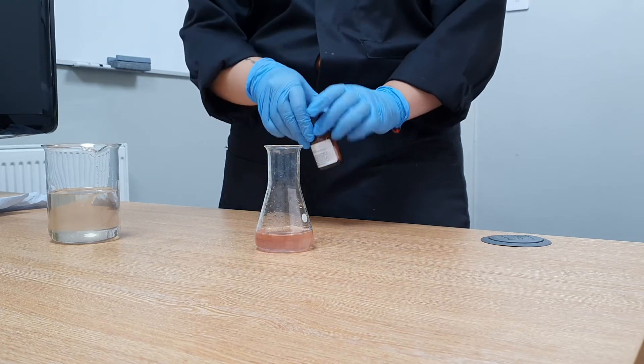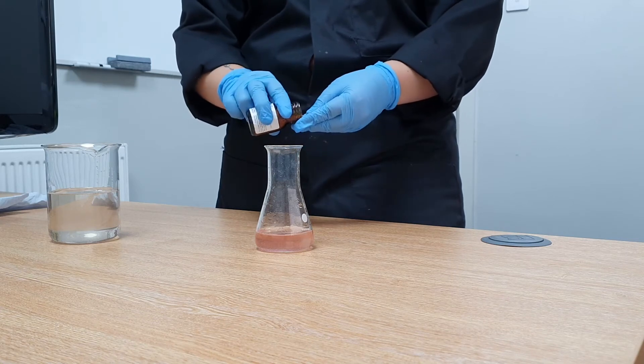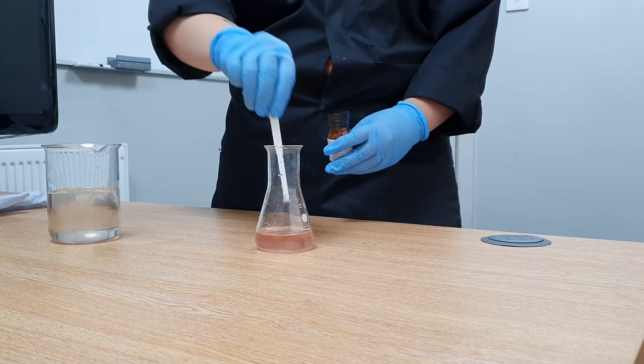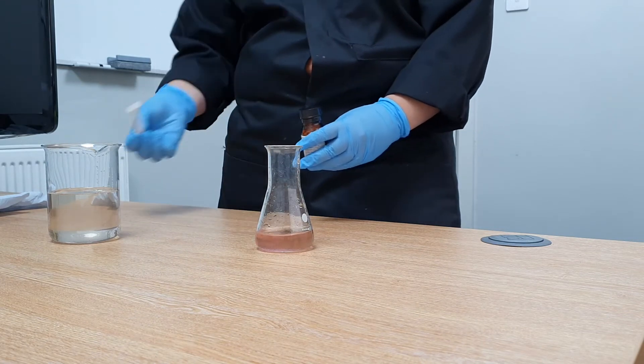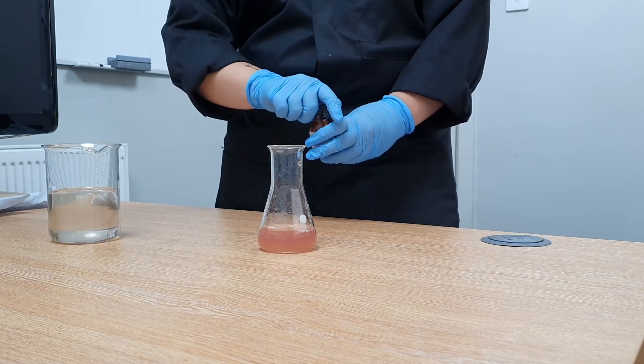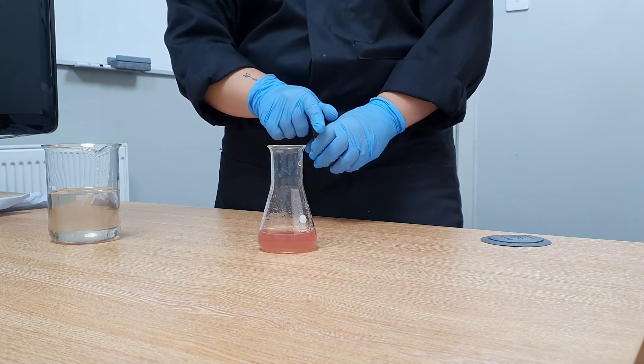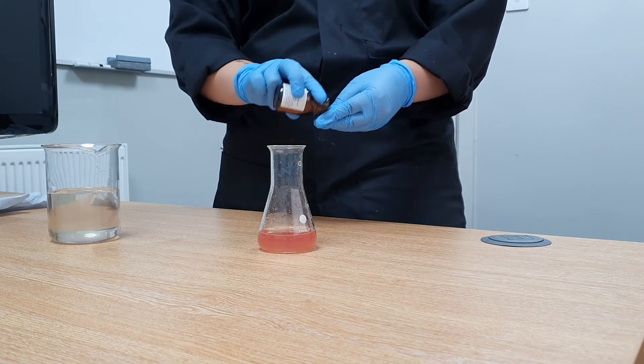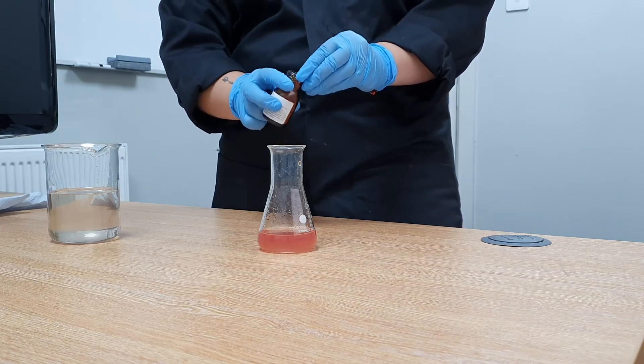Add a second yes no hardness tablet. If the red colour persists the total hardness is greater than 20 mg per litre. Continue to add tablets to the 20 ml of sample until a green colour is given.